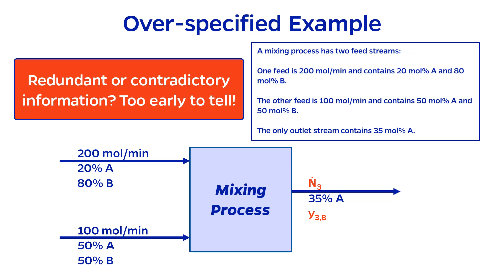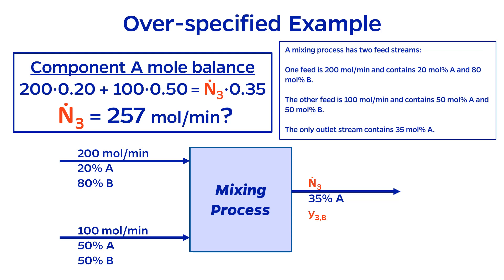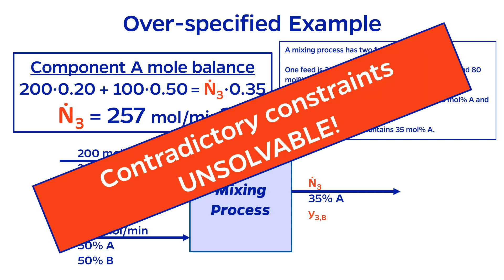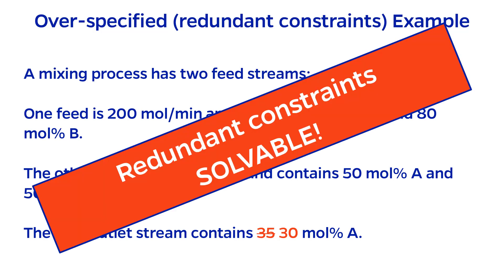There is no way to know whether an over-specified problem is redundant or contradictory without trying to solve it. Here, I can apply an overall material balance to find the overall molar flow rate of the exit stream should be 300 moles per minute. However, I could attempt to solve for this same variable by performing a material balance on component A. If I do it this way, I get 257 moles per minute. Obviously, this is not the same result, and I can therefore conclude that this problem is contradictory and therefore unsolvable. For what it's worth, if the problem statement had said that the outlet stream is 30 mole percent A instead of 35 percent, the problem would have been redundantly over-specified and both equations would have led me to the same answer.